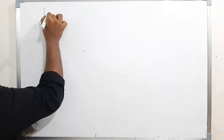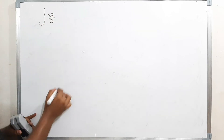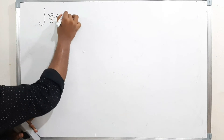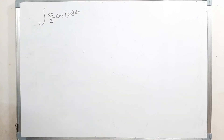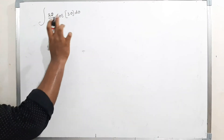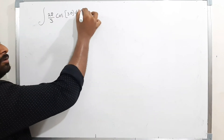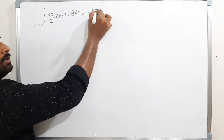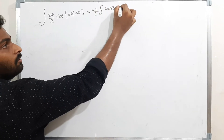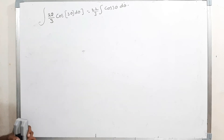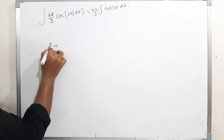Next problem: integration of (22/3)·cos(3θ) dθ. The variable here is θ, not x. Since 22/3 is a constant it comes out: (22/3) times the integration of cos(3θ) dθ.